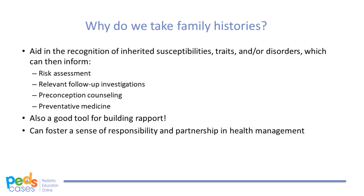It is also important to remember that families share not only genetic makeup, but also environmental and lifestyle factors, all of which impact health. For example, families may have an increased susceptibility to disorders like diabetes or hypertension, which are rarely caused by a single gene. Nevertheless, knowing about such susceptibility from a family history can help us recommend lifestyle measures, increased surveillance, diagnostic testing, or even intervention. In this way, family history can be a powerful tool for preventative medicine. The process of asking about family history can be invasive, but also provides an opportunity for building rapport with a patient or their parents, fostering partnership and empowering individuals to take responsibility for their own health.